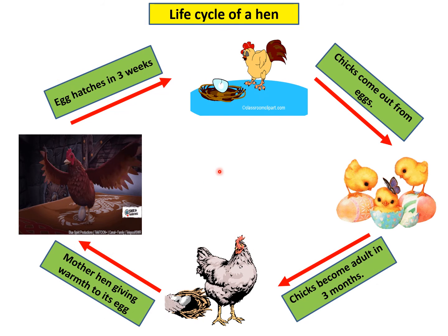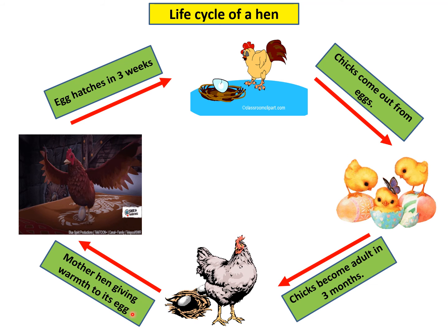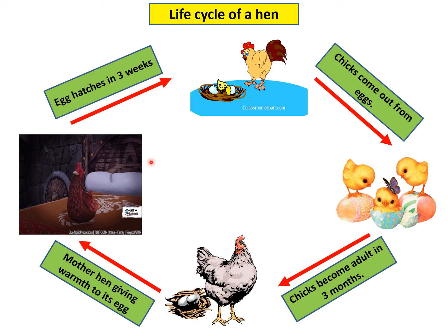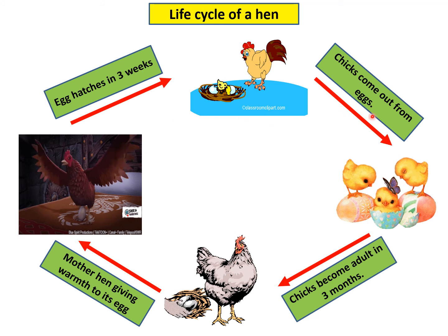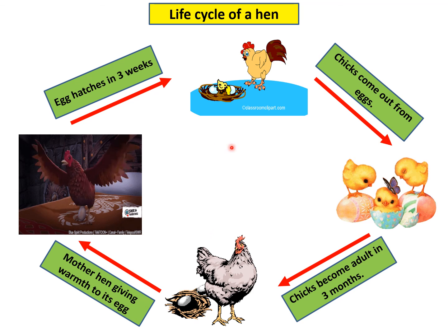Here is the life cycle of the hen. You can see the hen is laying the eggs. After that, the mother hen gives warmth to the egg by sitting on it. When it becomes warm for 3 weeks, the egg hatches. You can see how the egg is breaking. Then the chicks come out from the egg after breaking. The chick becomes an adult in 3 months and becomes a hen again, and again lays eggs. In this way the life cycle goes on.